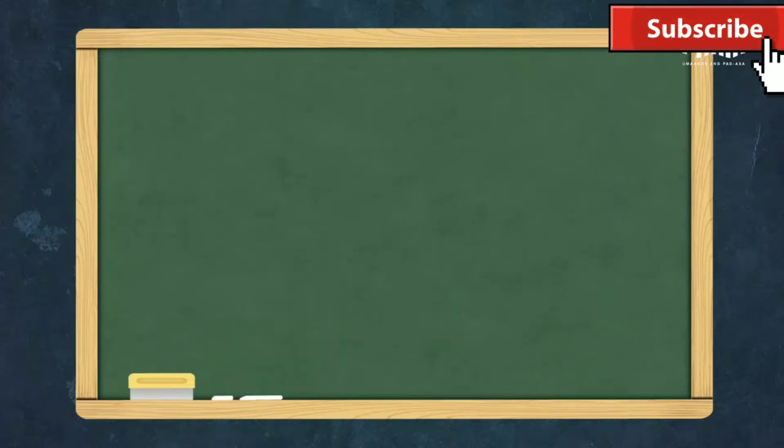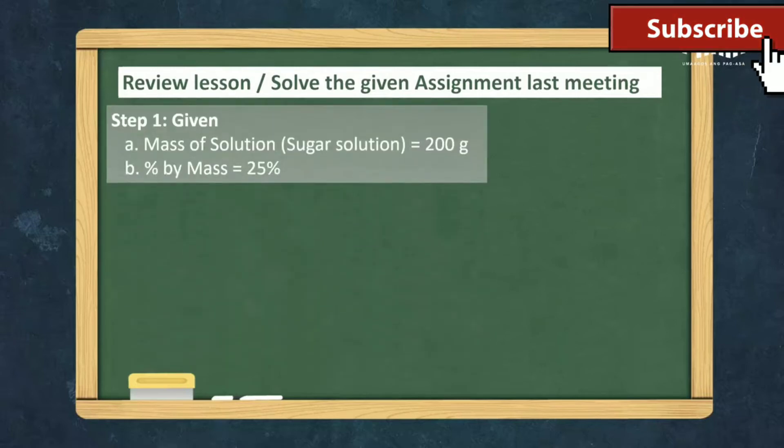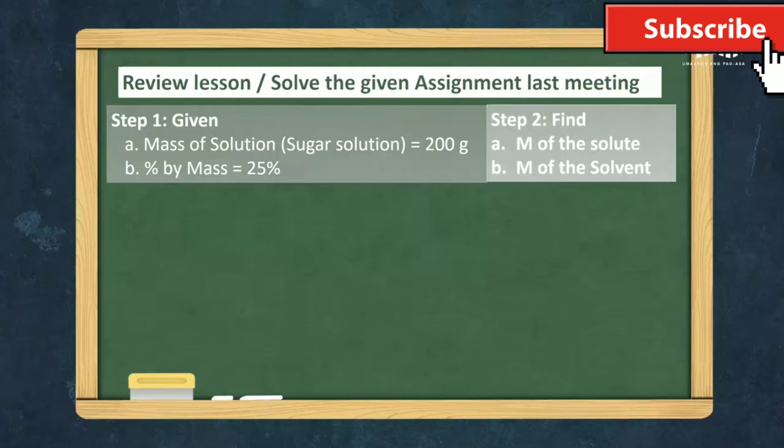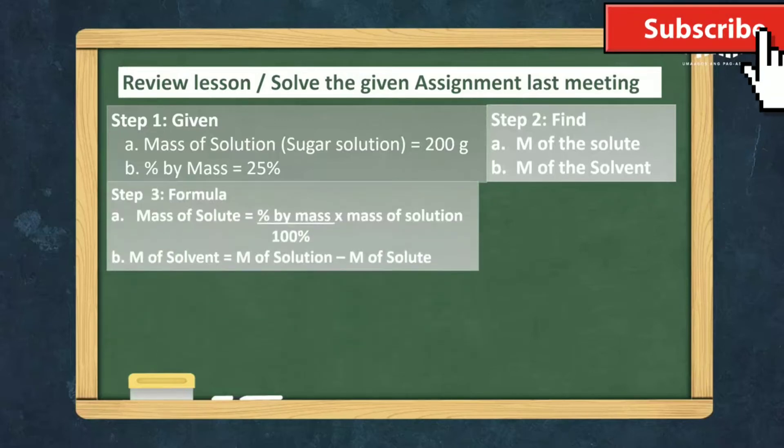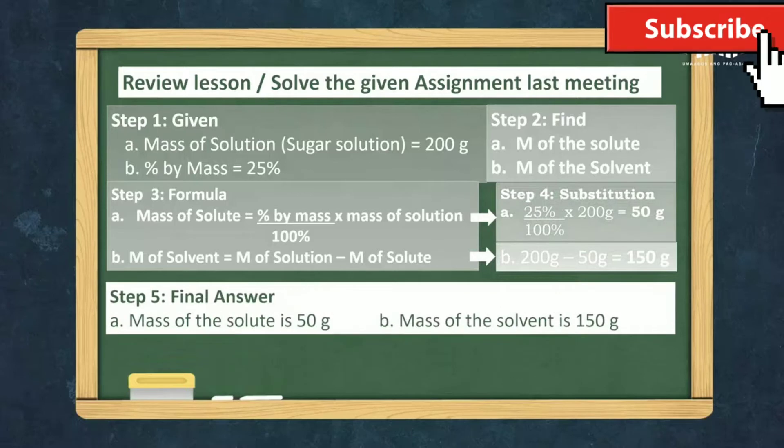Well, before we proceed to our discussion, let us check first your assignment last meeting. Step one, we have here the given. Step two, you are told to solve for the mass of the solute and the mass of the solvent. Step three, we have here the formulas in order to solve the problems. Step four, we have the substitution. And through computations, we found out that in a 200 grams of sugar solution, it is composed of 50 grams solute and 150 grams of solvent.